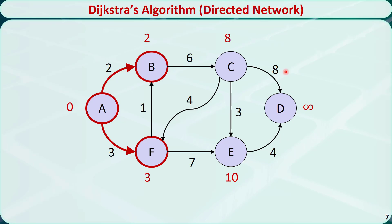Out of all the unvisited nodes, node C has the shortest distance, so we move from B to C. Node C has three direct neighbors: node D, node E, and node F. The distance of node D is 8 plus 8, equal to 16, which is smaller than positive infinity, so we replace it with 16. The distance of node E is 8 plus 3, equal to 11, which is larger than the previous value, so we leave it at 10. The distance of node F is 8 plus 4, equal to 12, which is larger than the previous value, so we leave it at 3.